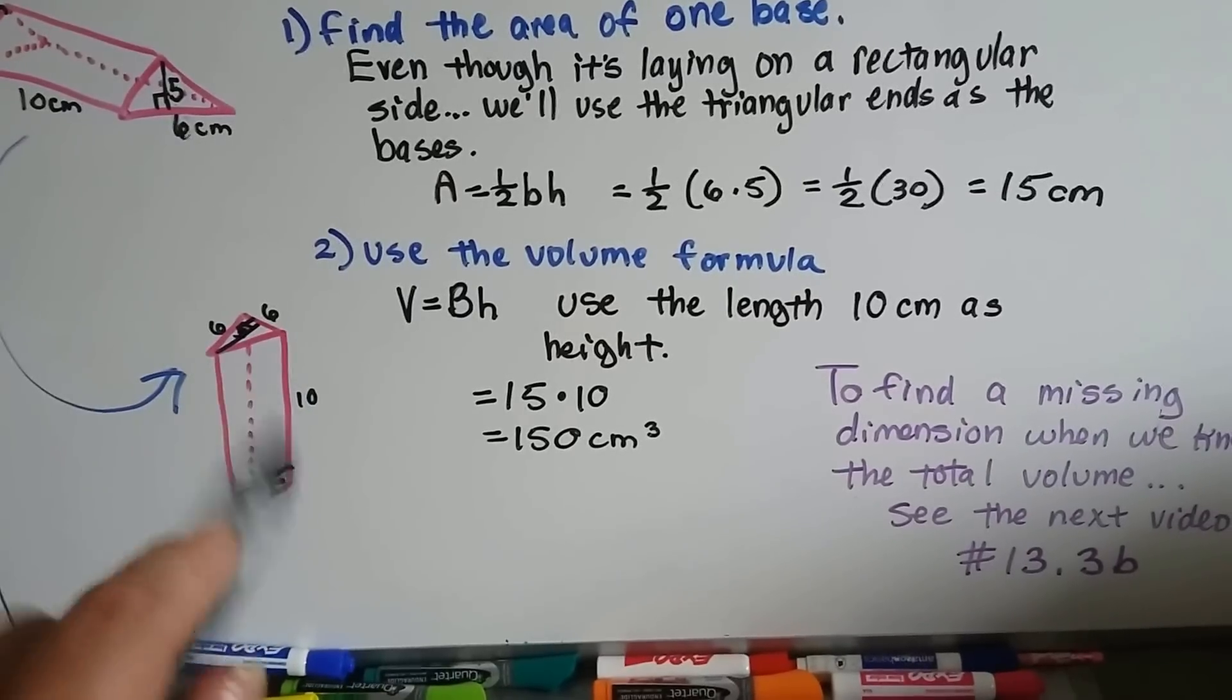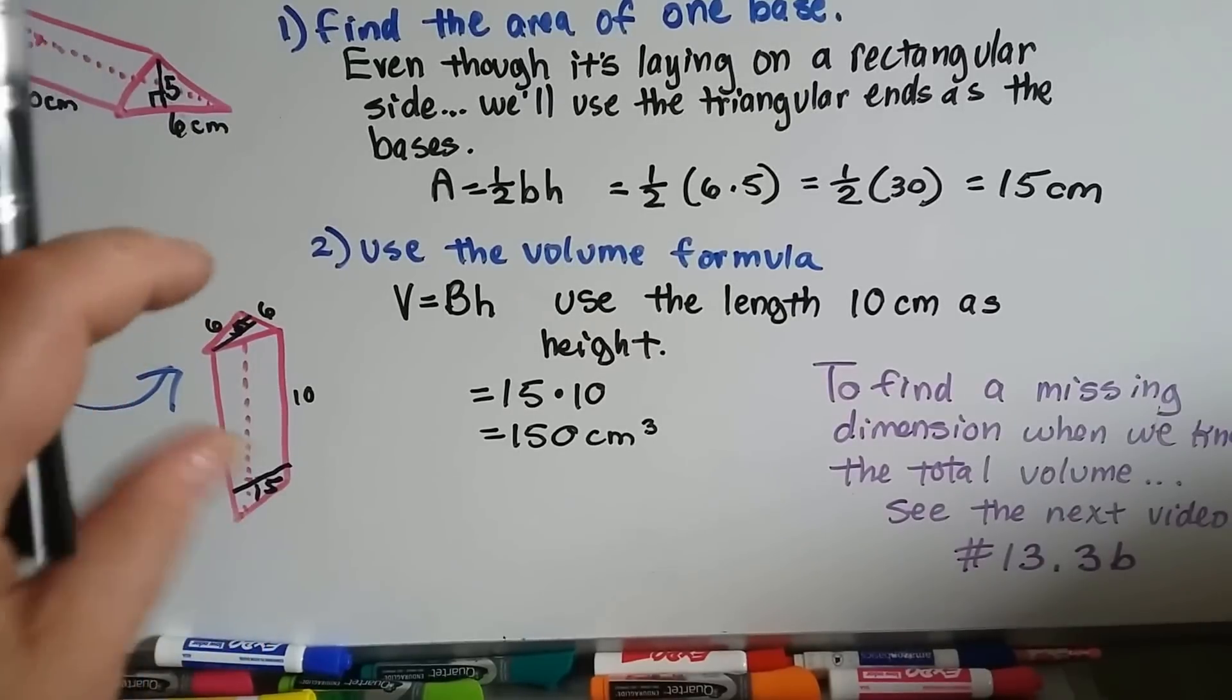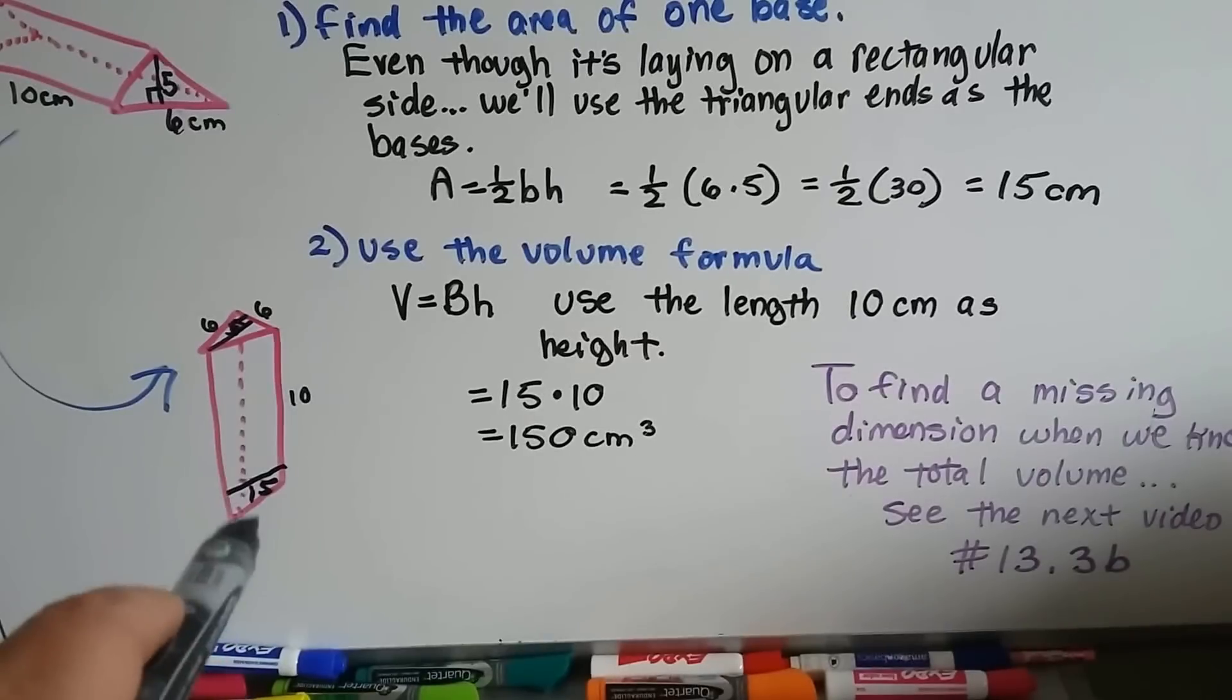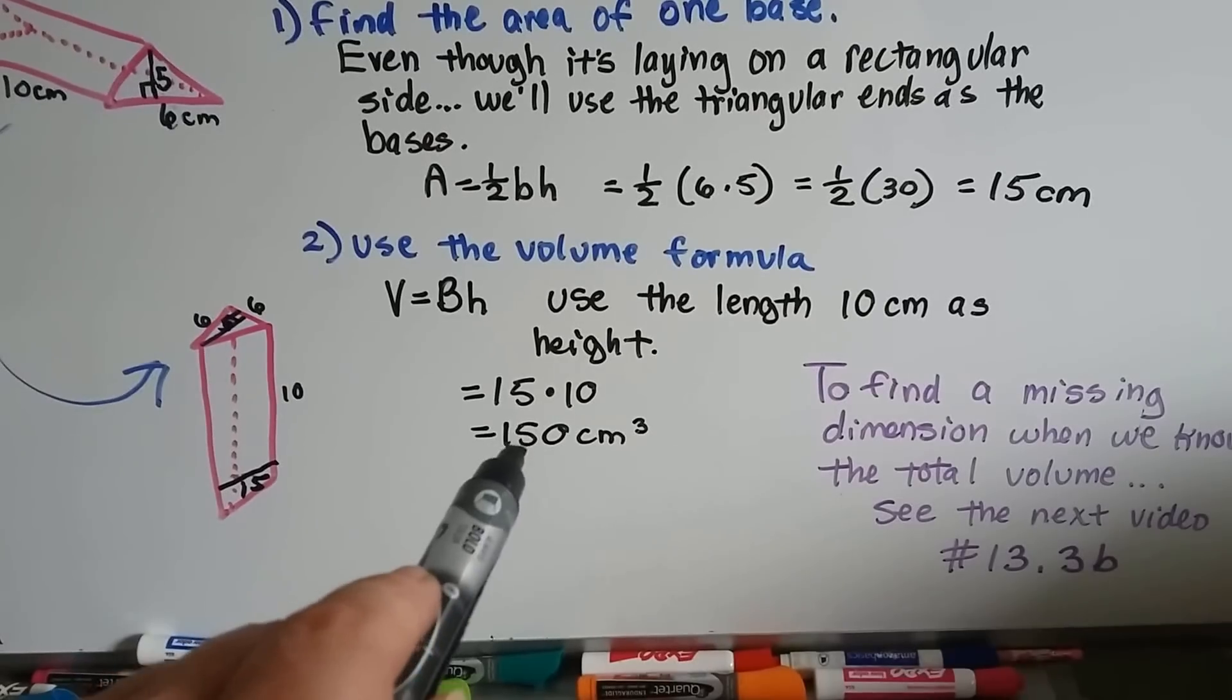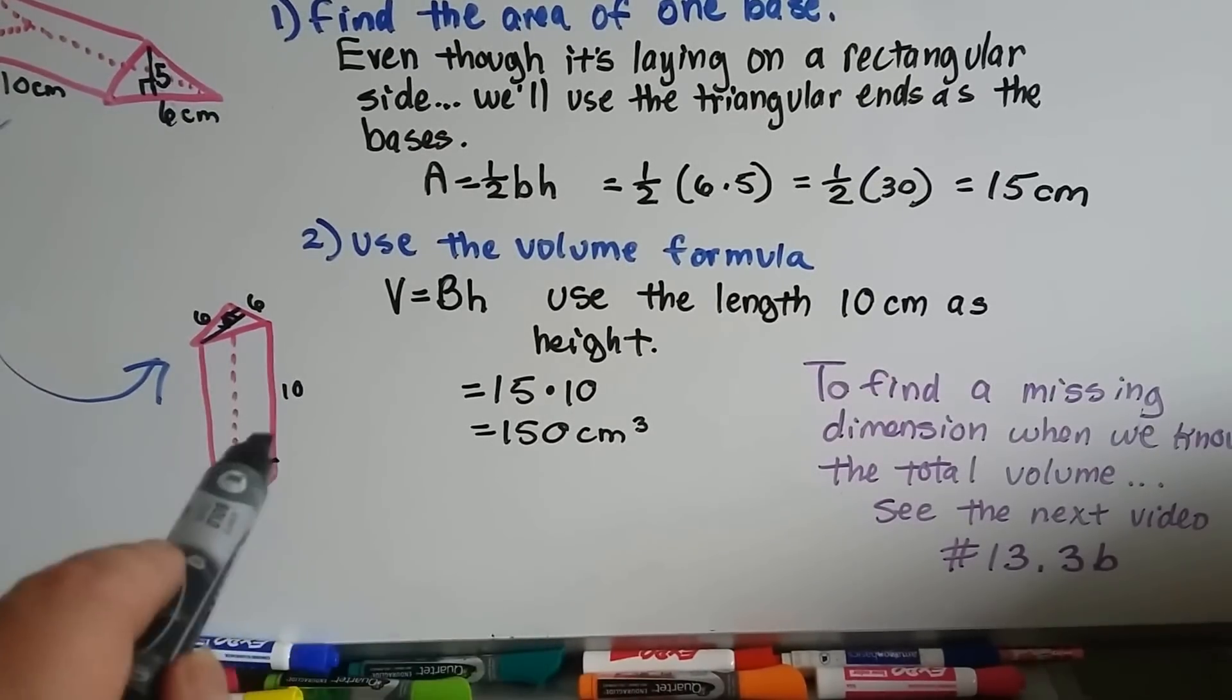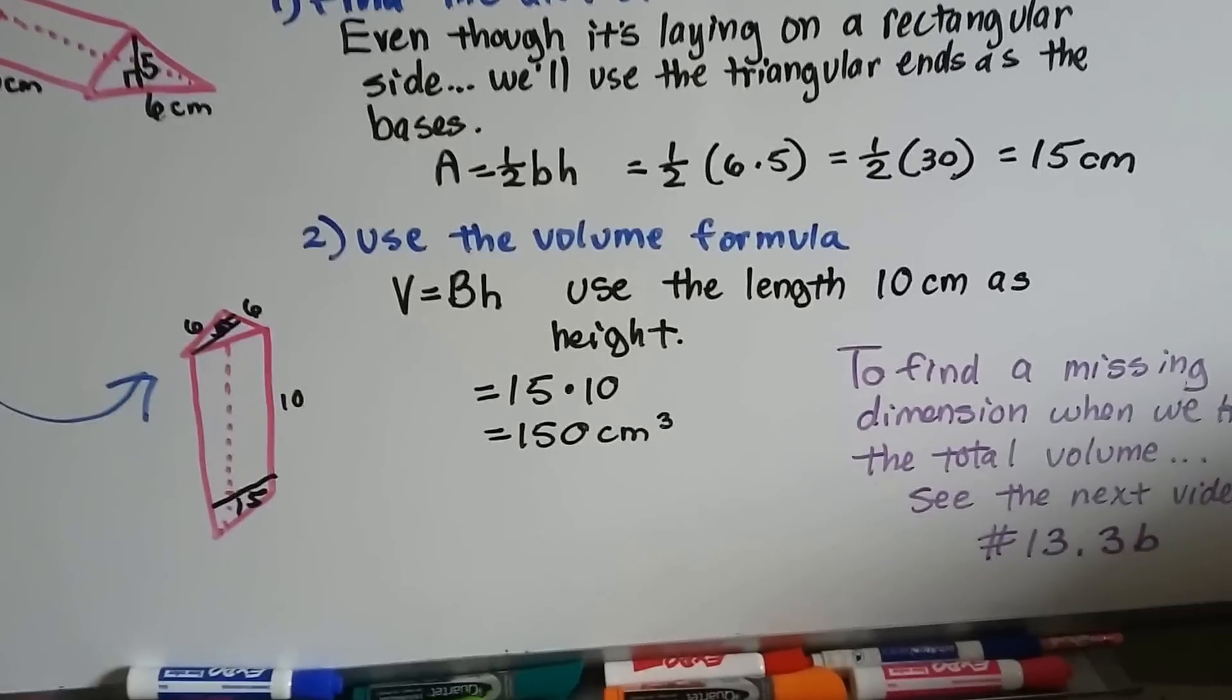If we turn it on its side and use these as the bases, then that is the height. 15 times 10 means we're going to have 10 layers of 15, so it's 150 centimeters cubed. That's the total volume of this triangular prism.